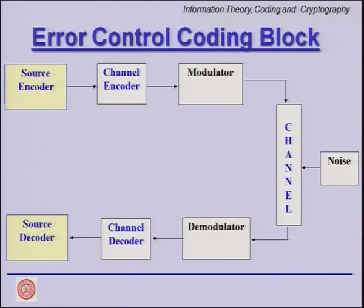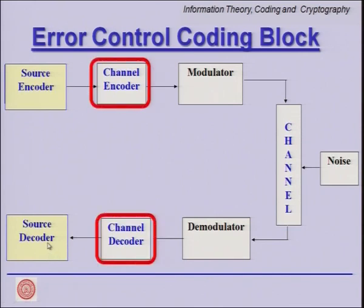This is our error control coding block diagram. We have a source encoder followed by a channel encoder and a modulator, and then we send our waveforms over the channel where they are corrupted by noise. At the receiving end, we demodulate, the channel decoder recovers from the errors introduced by the channel.